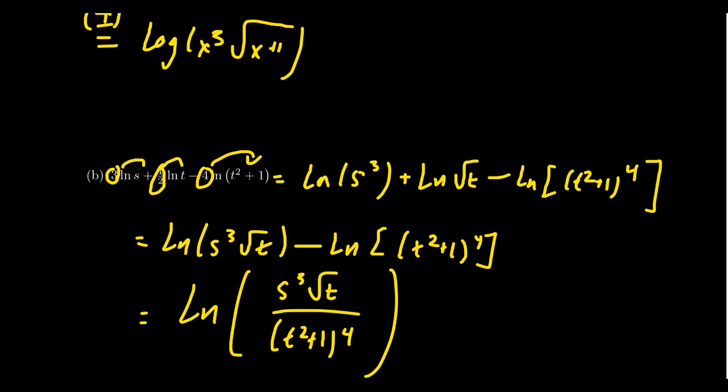A nice rule of thumb: whoever had a positive coefficient when you started will end up in the numerator, and whoever had a negative coefficient will end up in the denominator when you condense. Conversely, when expanding, whoever started in the numerator will get a positive coefficient, and whoever started in the denominator will get a negative coefficient.